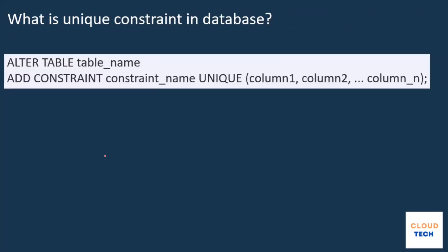The next question is: what is a unique constraint in a database? A unique constraint is either a column or a set of columns that uniquely defines a record. For example, if you want names in a table to be unique, you add a unique constraint on the name column. Using ALTER TABLE, you give the table name, add a constraint with a constraint name, and define UNIQUE with your column name. A unique constraint ensures only unique values are present in that column.